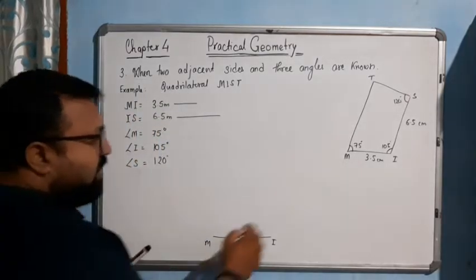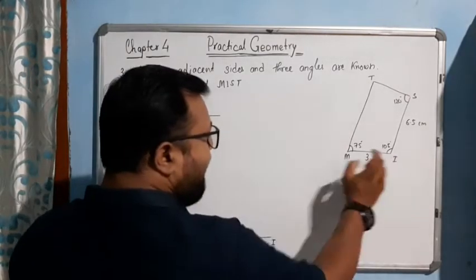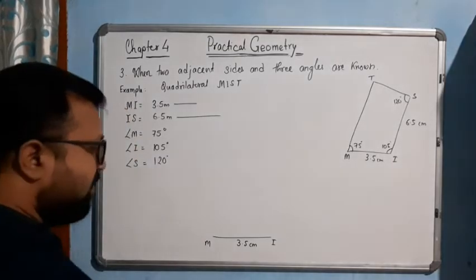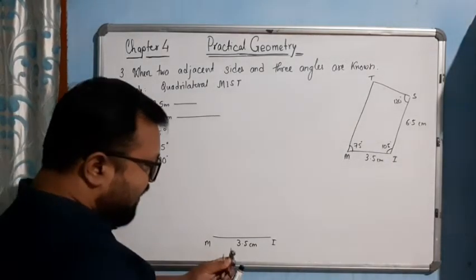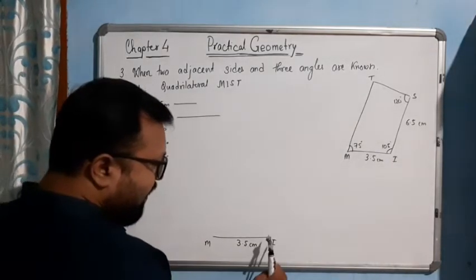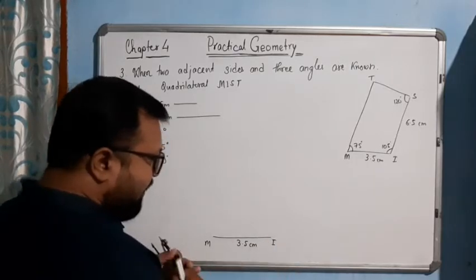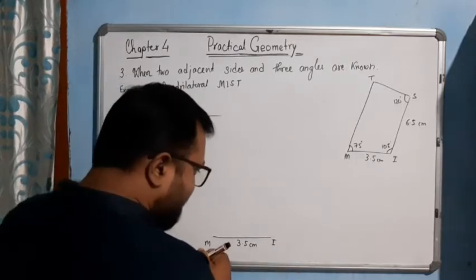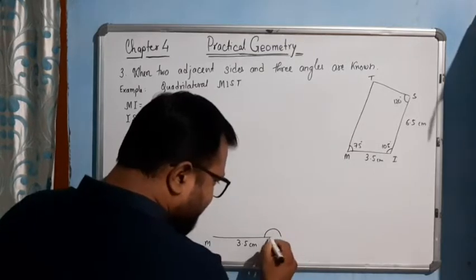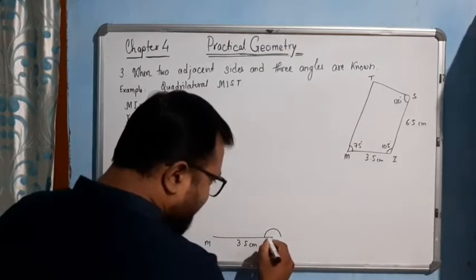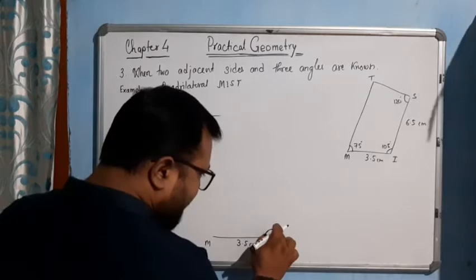Now you have to construct 105 degrees at I. Place the pin at I and draw an arc. The arc will look like this. In this way you make the arc.